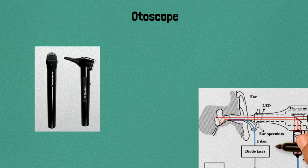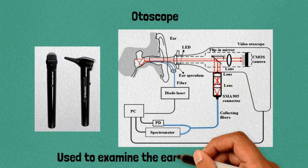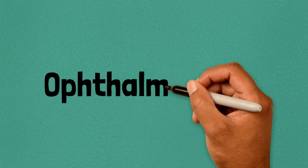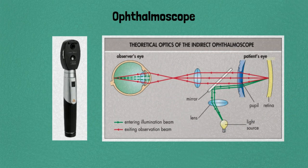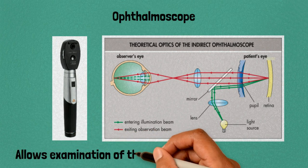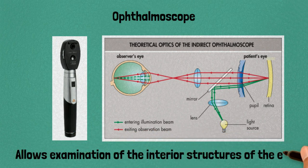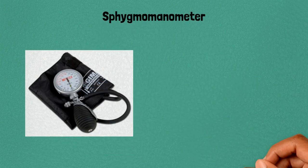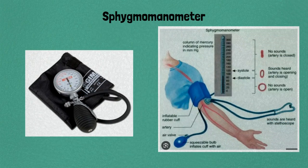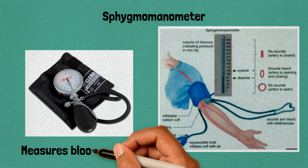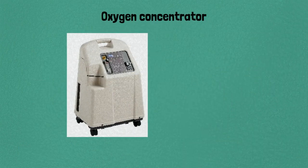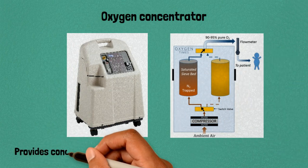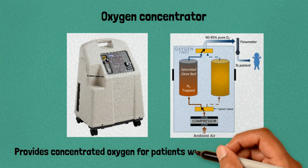Thirty: otoscope, used to examine the ears and eardrum. Thirty-one: ophthalmoscope, allows examination of the interior structures of the eye. Thirty-two: sphygmomanometer, measures blood pressure. Thirty-three: oxygen concentrator, provides concentrated oxygen for patients with respiratory conditions.